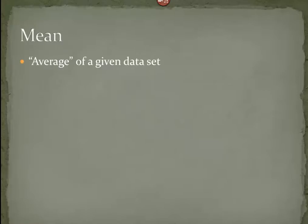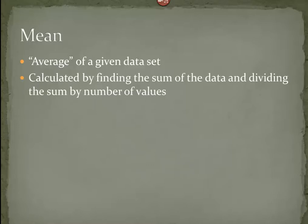The first one we're going to look at, you probably are the most familiar with. It's called the mean. The mean is, as you probably know, the average of a given data set. The way we find the mean is to add up all of the numbers that we have, and then divide that sum by the number of values.